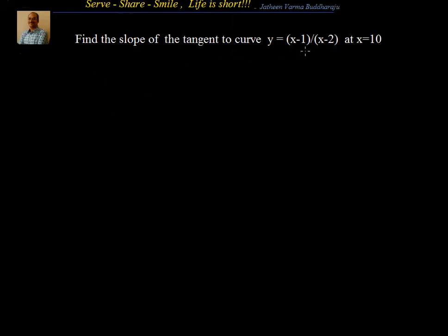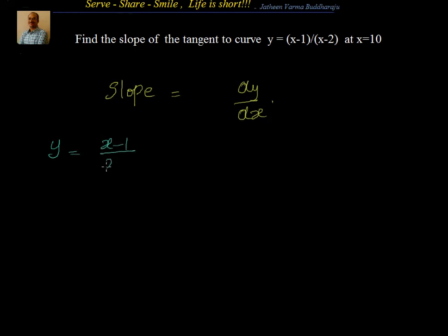Find the slope of the tangent to the curve y equal to (x minus 1) by (x minus 2) at x equal to 10. We have to find out the slope of the tangent to the curve. We know that slope of the tangent to the curve is equal to dy by dx. So let's first find out dy by dx. For that, we start with y equal to (x minus 1) divided by (x minus 2), which I can write as (x minus 2 plus 1) divided by (x minus 2), which can be written as 1 plus 1 by (x minus 2).